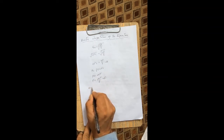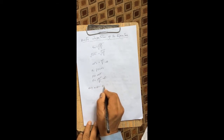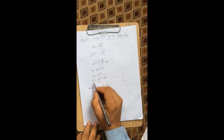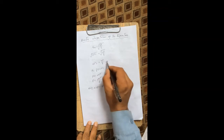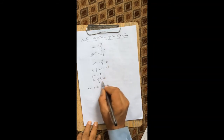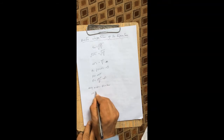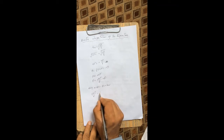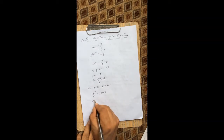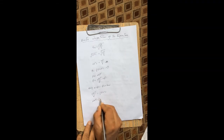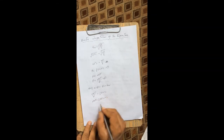Using equations one and two: if I put the value of pressure from equation two into equation one, we get nkT over V is equal to one-third rho times v². Bringing the volume V to the other side, we have nkT equal to one-third rho V times v².